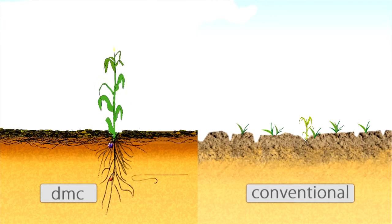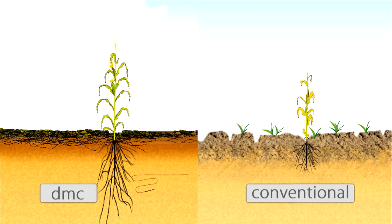Lastly, restore the soil's biological activity, the true motor of DMC cropping systems.